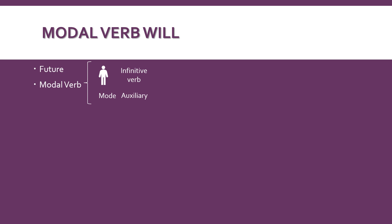Now we're going to see all types of sentences using this modal verb will. First, we're going to start with the positive sentence. In this case we're going to start with our pronoun, next the modal verb will, next the verb in the infinitive form, and finally the complement.